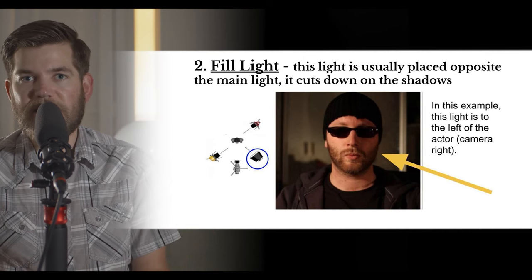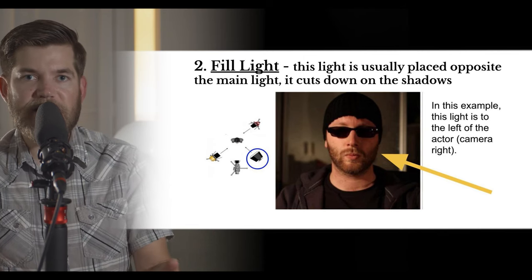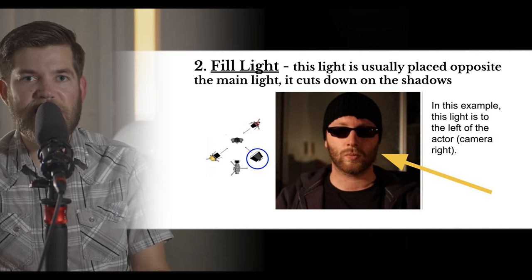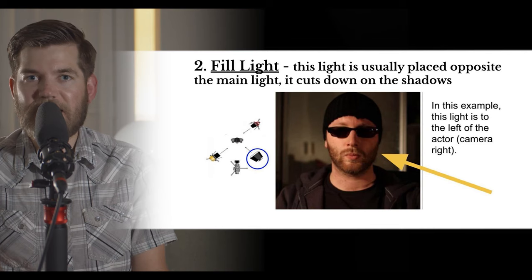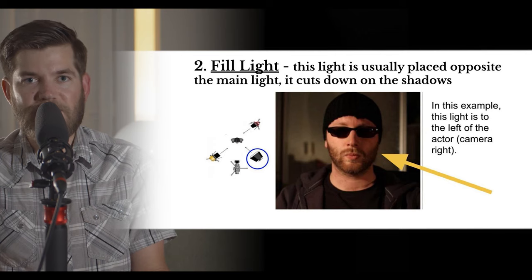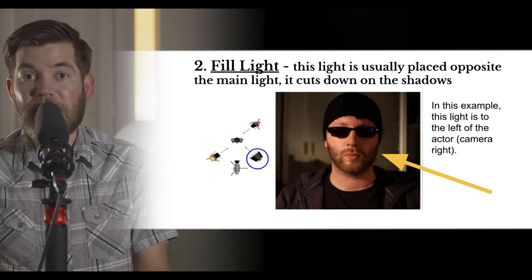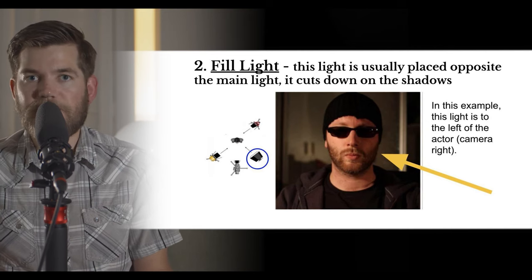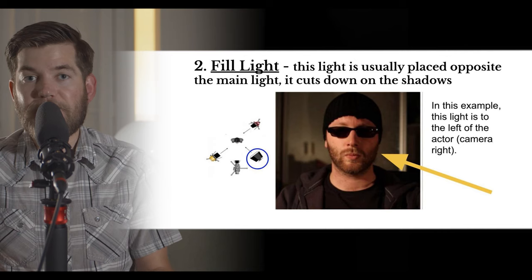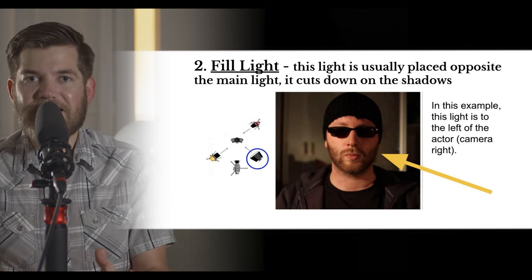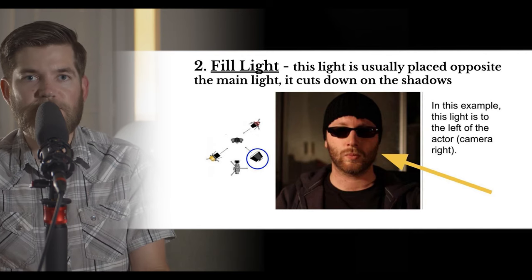The fill light is placed opposite the key light. In the diagram you can see the fill light has a shade in front of it — it's not direct light on the subject's face; it has some diffusion like a lampshade blocking some of the light. Instead of using diffusion here, the fill light is bounced off the wall of the apartment, making it less direct and less intense. You could also use a dimmer switch to lower the intensity.